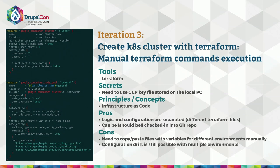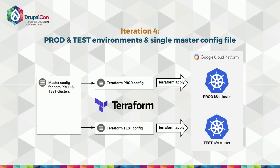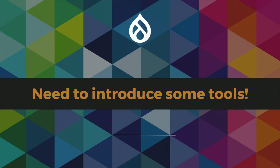We have a solution for that. In the next iteration we use a master configuration file and automatically generate environment-specific configuration files — like production and test — from that master. Then we apply them to create our production and test Kubernetes clusters. To do this, we need to introduce some tools, and that's the main part I want to cover.